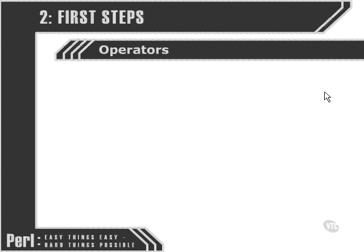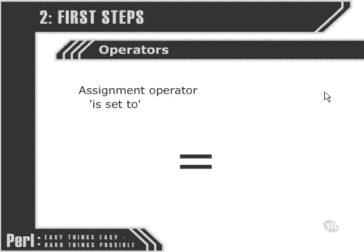Now we've looked at variables and the basic data types that we can include within them, let's have a look at how we can manipulate them. An important element within the Perl language for manipulating variables is the operator, and in this movie we're going to look at different kinds of operators and the way they work.